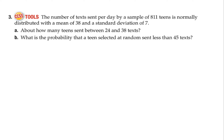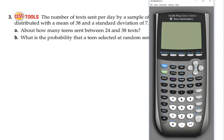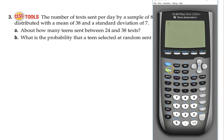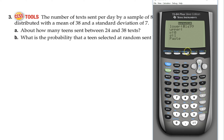Now let's talk about doing it with the calculator. For normal distribution, go to Distributions — that's the blue button, second VARS. When the menu pops up, you have Normal PDF, Normal CDF, and InvNorm. We always use Normal CDF. We never use Normal PDF, and we use InvNorm later. For now, just use Normal CDF. If your calculator is updated, it asks for lower bound, upper bound, mean, and standard deviation.